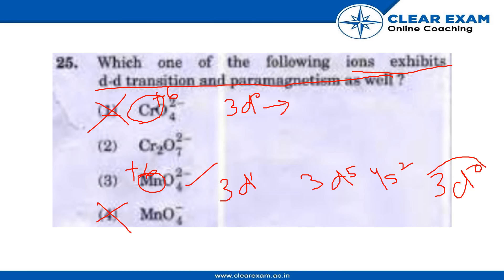Coming to Cr2O7 2-, this also has a +6 oxidation state and the outer electronic configuration is 3d0. That means this cannot do any d-d transition.